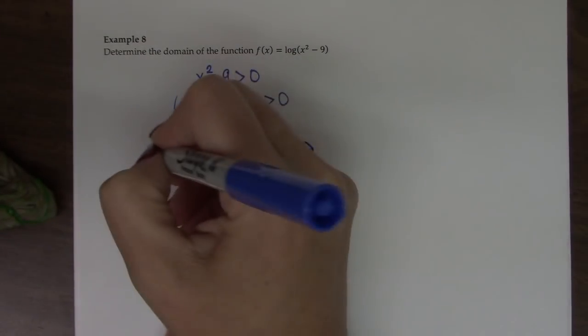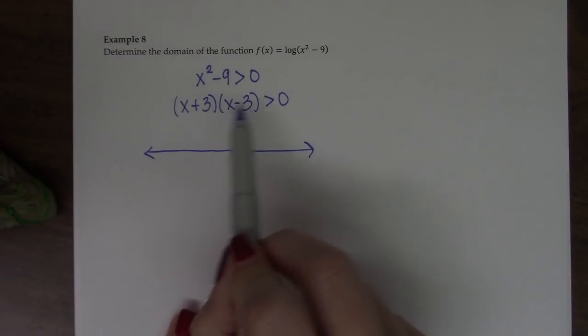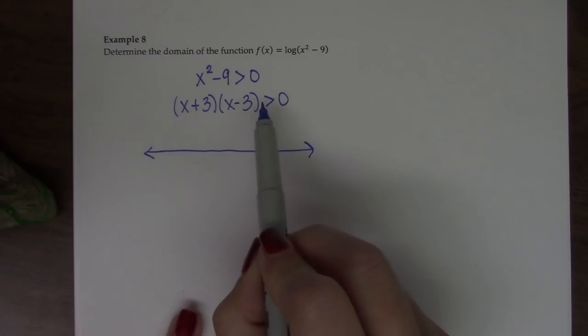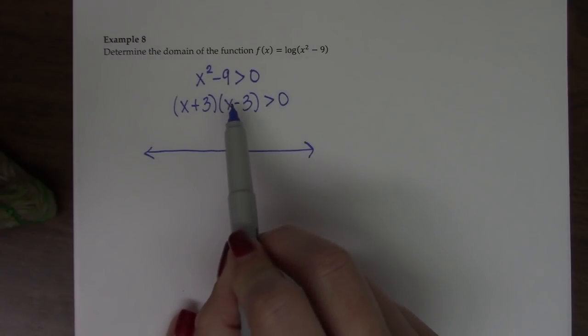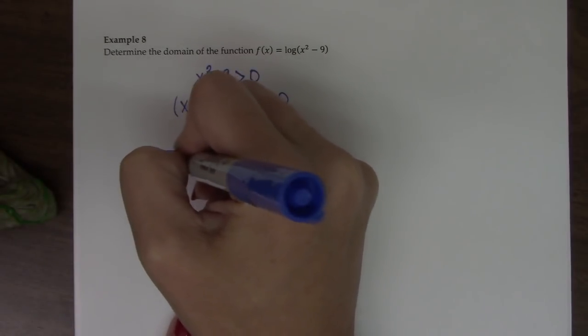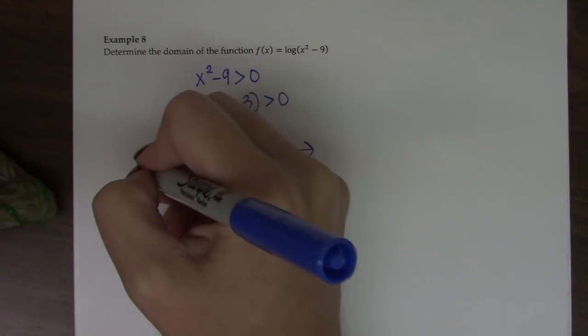And I first look at which values of x would actually make the entire expression equal to 0. So here, if I have a negative 3, the whole thing becomes 0. And if I have a 3, the whole thing becomes 0. So on my number line, I'm going to plot negative 3 and 3.